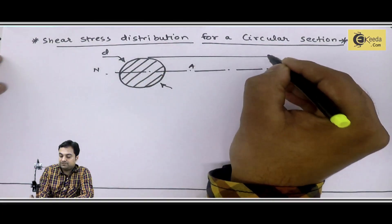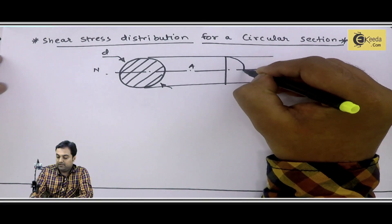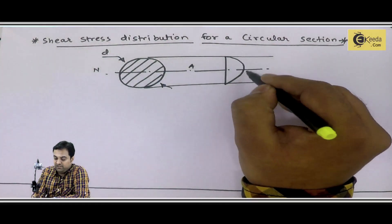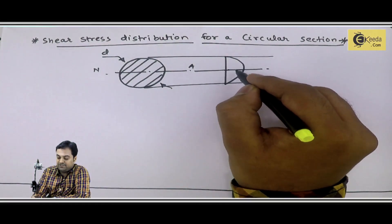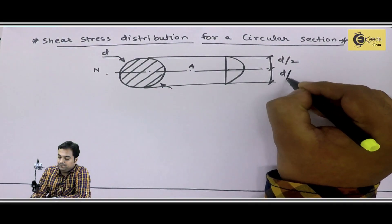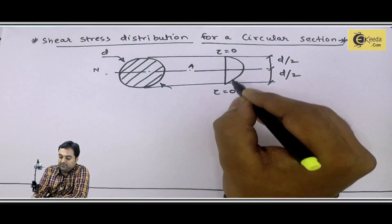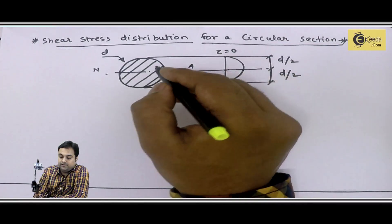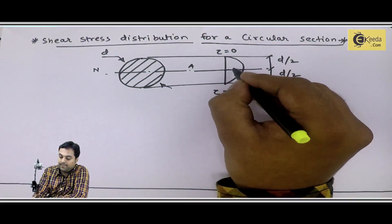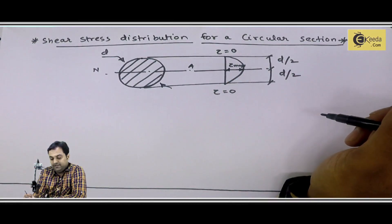The stress distribution is like this — it is again in the form of a parabola. Just as the stress distribution was for a rectangle, the same way it would be for a circle also. This height is D/2 and this is D/2. Shear stress will be zero at the extreme ends, because at the top and bottom of the circular section there is no area.